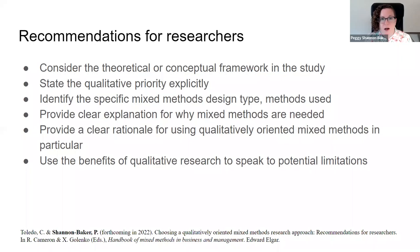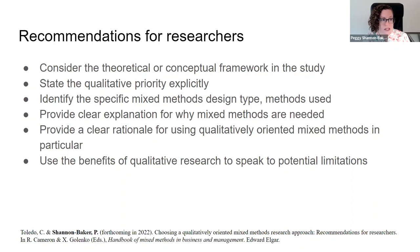Based on our comparisons of those examples of business and management scholars that have used qualitatively oriented mixed methods, we came up with a number of recommendations for researchers who might be interested in implementing this kind of mixed methods in their own work. I'll focus on the last one here, which is: use the benefits of qualitative research to speak to potential limitations. Across the different examples in our chapter, we noted how a number of them pinpoint specific limitations like sample size or how the sample is impacted by a local context — but these are actually quantitatively oriented limitations, not qualitatively oriented ones, despite these being qualitatively oriented studies.